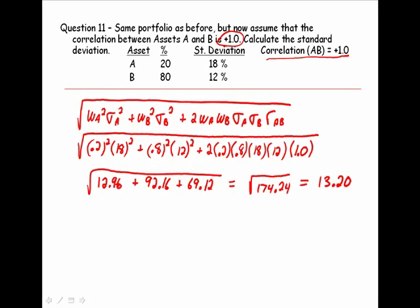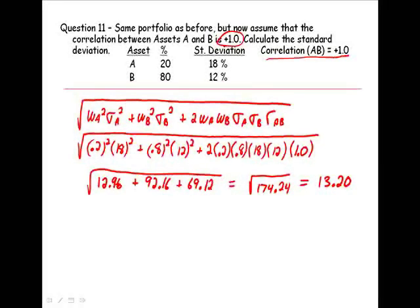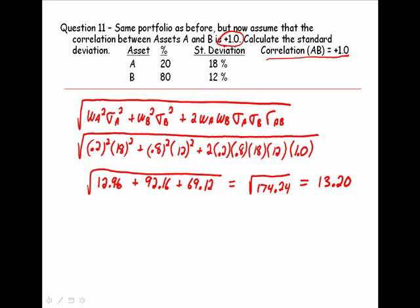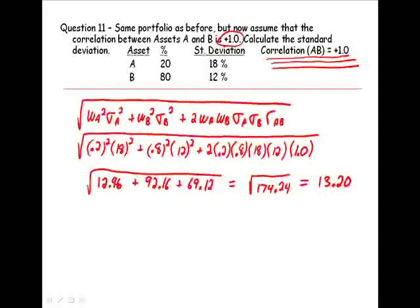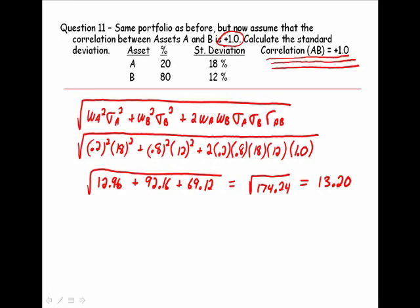Now, there's two items of note here that are significant. Number one, notice that since the correlation is larger than it was in the previous example, we ended up with a larger standard deviation, and that's consistent with what we know. The greater the correlation, the more positive correlation there is, the larger the standard deviation. The further away from positive 1 that we get, the more benefits in terms of risk reduction that we would have.